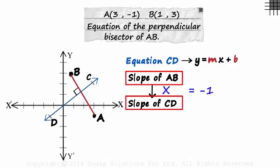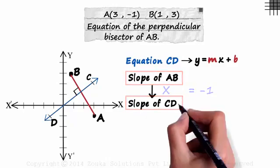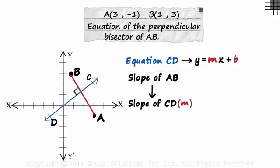Their product will equal minus 1, so we will have M. Now how do we find B, which is the Y-intercept? Look at the slope-intercept form. If we have M, then we just need the coordinates of one point on CD to find B. Because then we can substitute the coordinates in place of X and Y and get B.